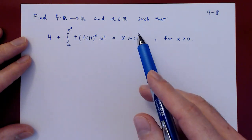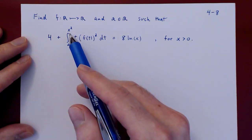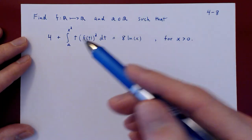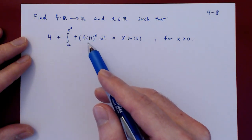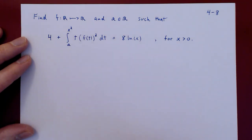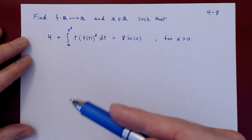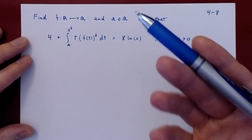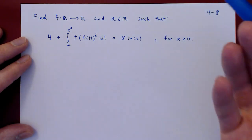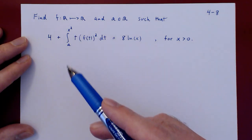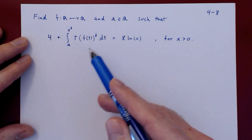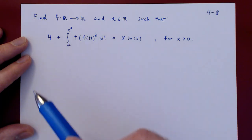We have an obvious problem here looking at this equation: we cannot perform the integration because we don't know what the function f is. So in attempting to solve for f, this means freeing f from the integral — we have to find a way to cancel the integral. The inverse process of integration is differentiation. Both sides are functions of x, so we will simply differentiate both sides with respect to x. This will eliminate the integral and allow us to solve for f. Once we know what f is, we can perform the integration and then solve for a.